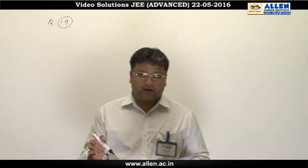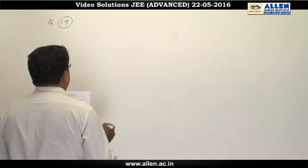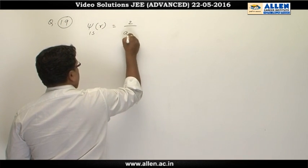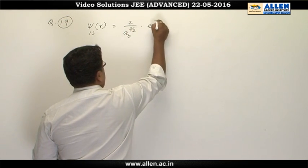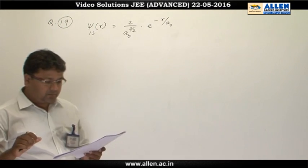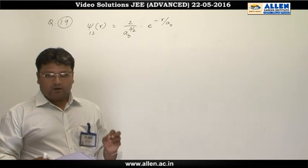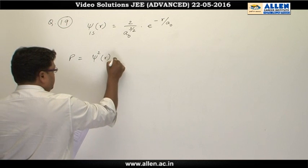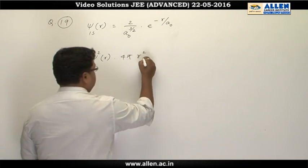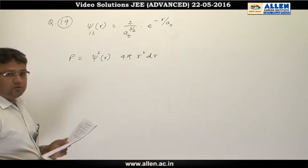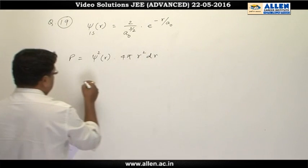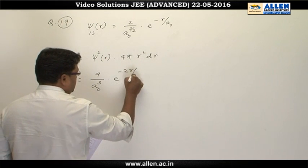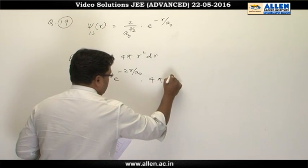If we go behind the mathematics of this question, the orbital given is 1s. The radial function of the 1s orbital is 2 upon a₀ to the power 3/2, times e to the power minus r upon a₀, where a₀ represents the Bohr radius, that is 0.529 angstrom. The probability of finding the electron is given as ψ²(r) · 4πr² dr. This equation becomes 4 upon a₀³ · e^(−2r/a₀) · 4πr² dr.